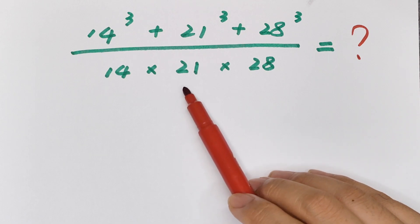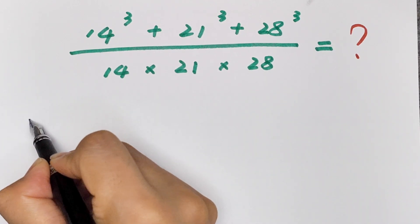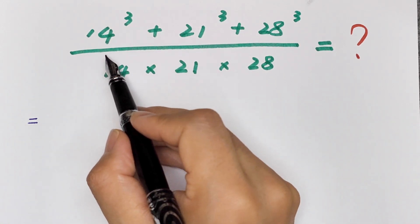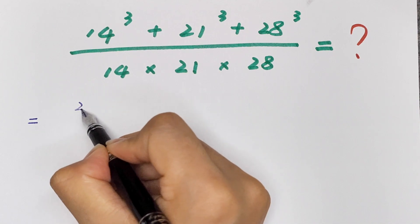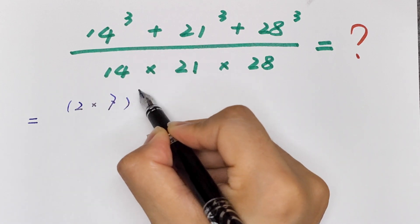This will be equal to, in the numerator, 14 is same as 2 × 7, bracket cubed.